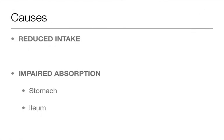Causes of vitamin B12 deficiency include reduced intake, though this is uncommon as the body has large reserves — seen mainly in very strict vegans. Much more common is impaired absorption, either due to a problem in the stomach (loss of intrinsic factor) or in the terminal ileum. The most common stomach cause is post-gastrectomy, and the most common ileal causes are Crohn's disease with terminal ileitis, ileal resection, and pernicious anemia.